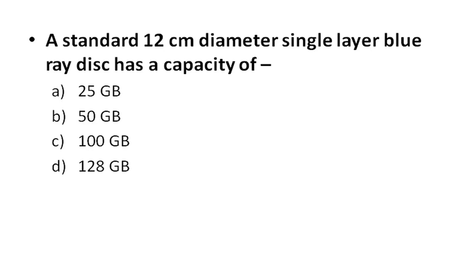A standard 12 cm diameter single-layer Blu-ray disc has a capacity of how much? The options are 25 GB, 50 GB, 100 GB, and 128 GB. The right answer is 25 GB. A single-layer Blu-ray disc with a 12 cm diameter has a capacity of 25 GB.